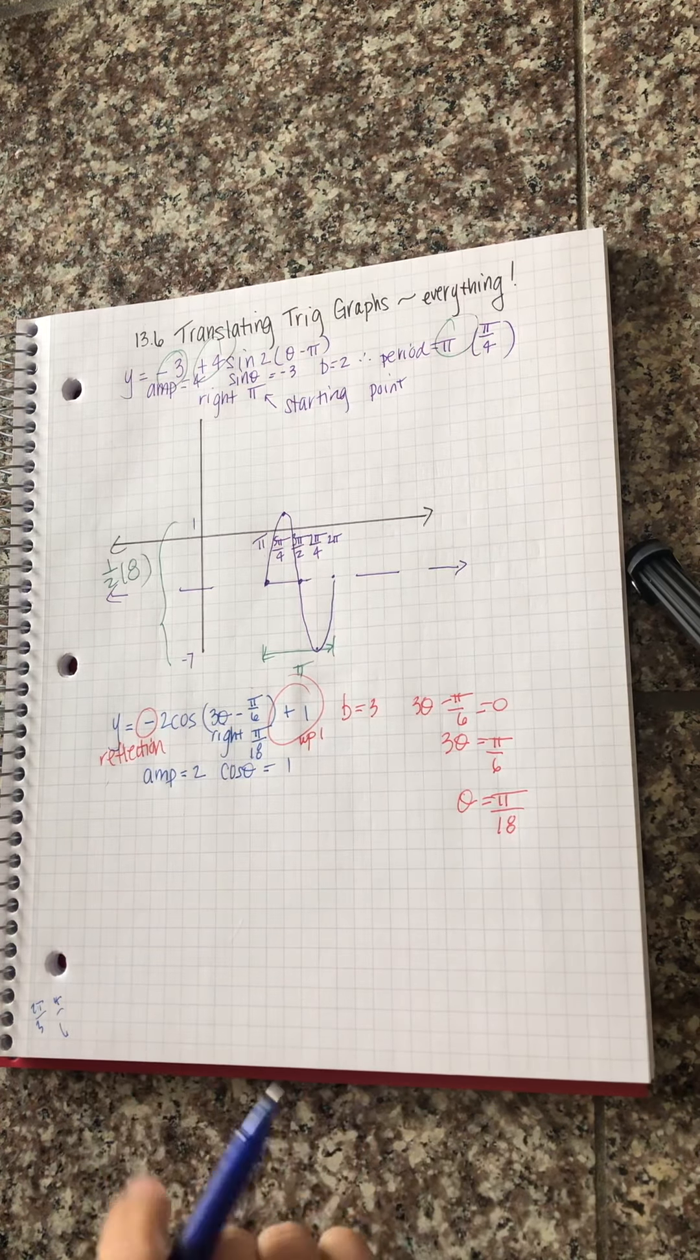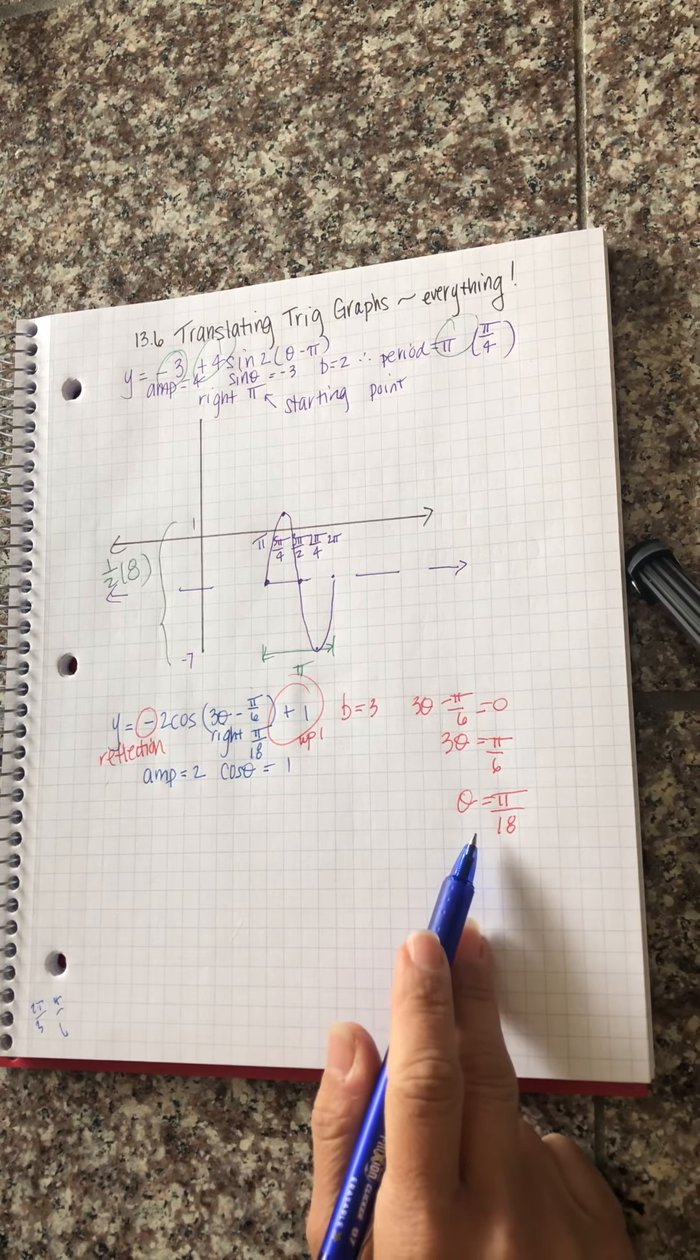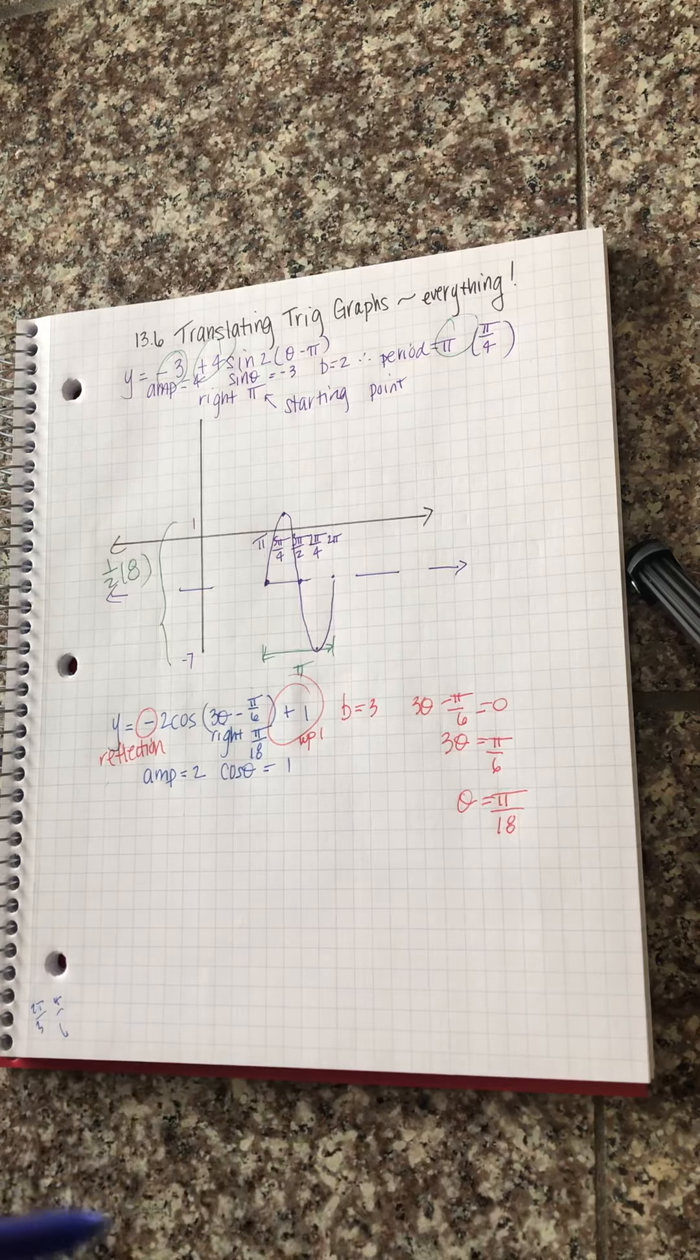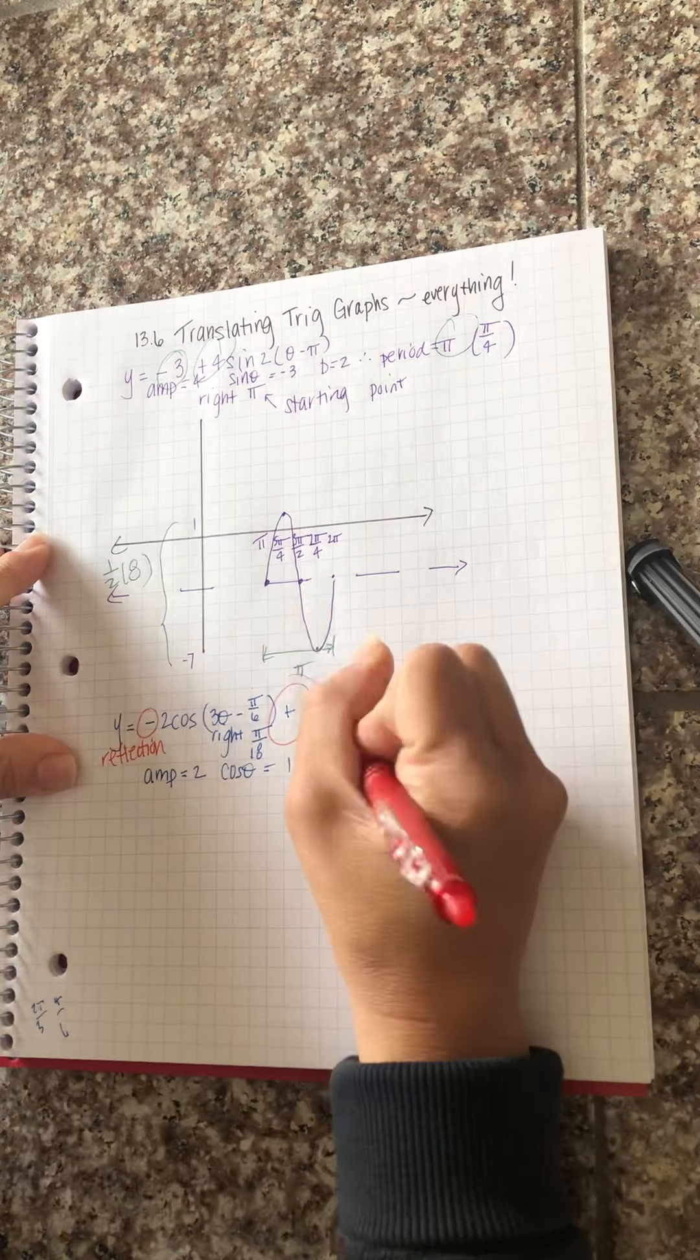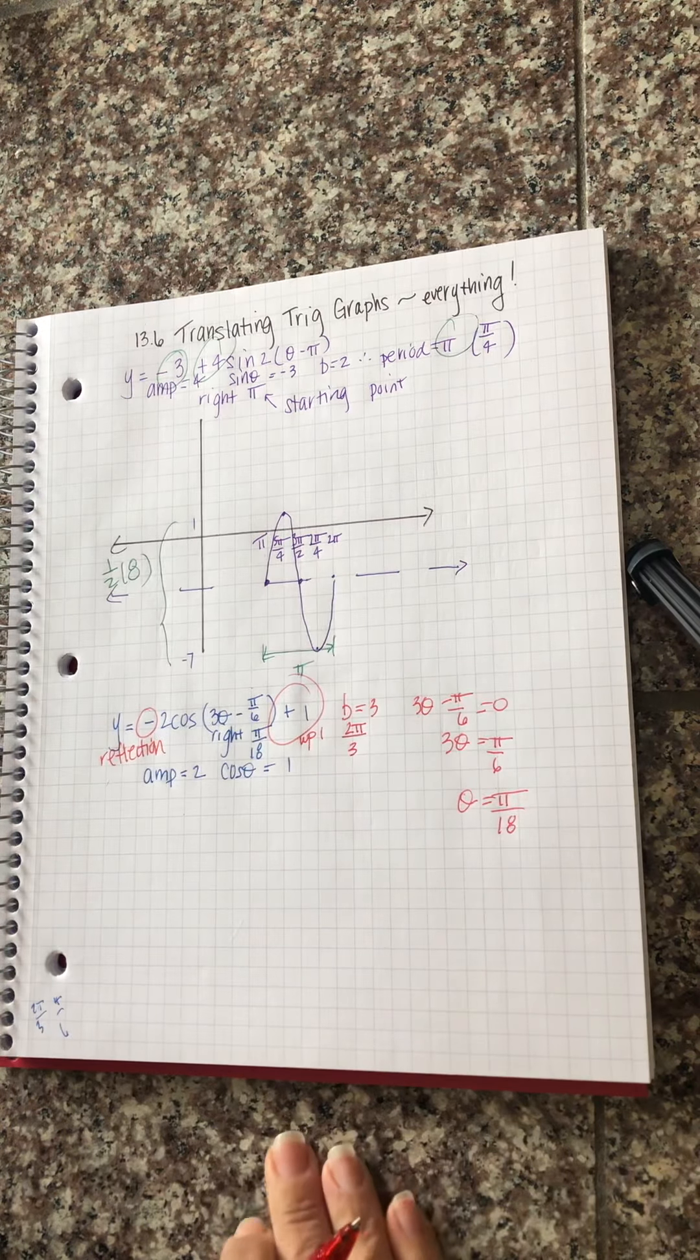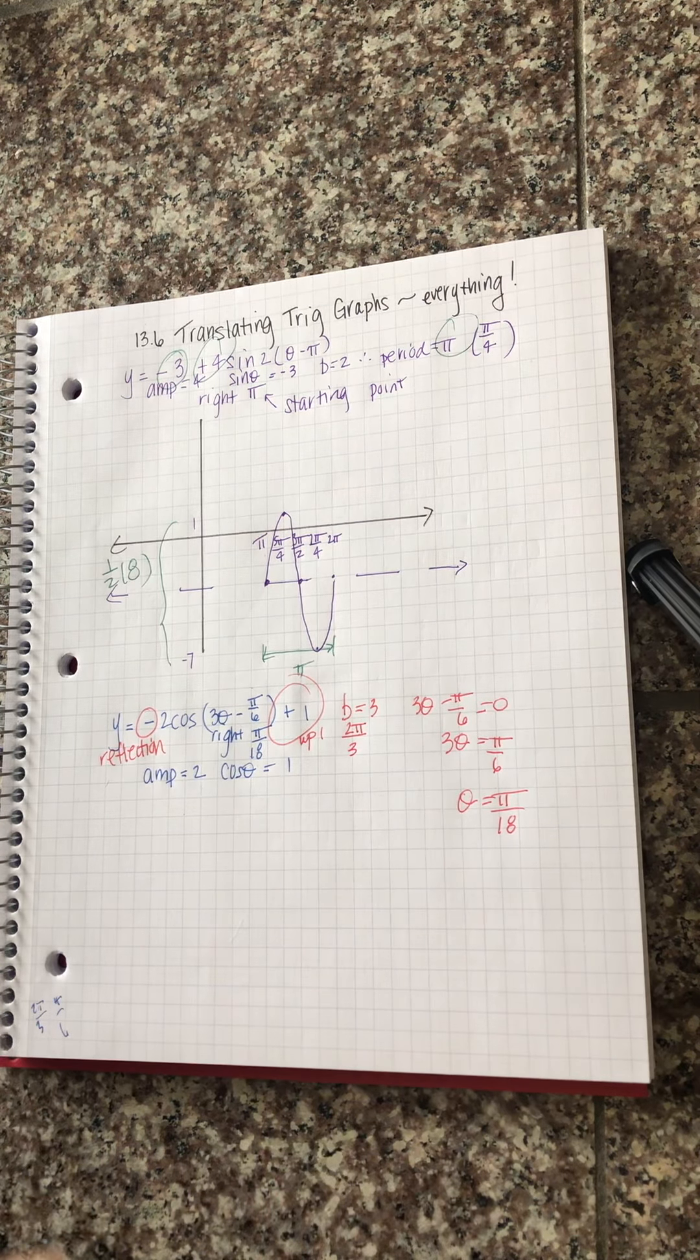Well you know it's right pi over 18 and that's what I did here. So the next question is what's the period? B is 3. So the period is 2 pi over b which is 3. So the period is 2 pi over 3.